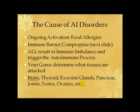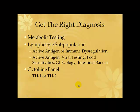The only way to know whether it is or not, so you can actually treat it, is to do the test. We do our metabolic testing. The number one thing we do in autoimmune conditions is a lymphocyte subpopulation — the T and B cell subpopulations, and natural killer cell populations. We look at the T helper to T suppressor ratio, which tells us if there's a high helper ratio — meaning we have an active antigen.